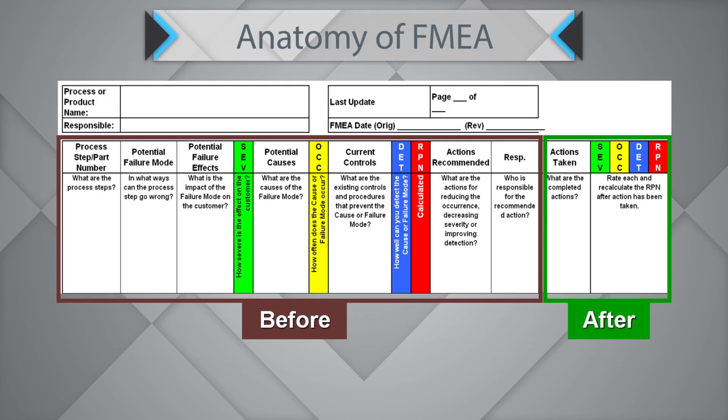This is how a typical FMEA sheet would look like. You would have the process step, the potential failure mode, the potential failure effects, the severity associated with it, the potential causes for the failure mode, occurrence, list of the current controls, detection, and the RPN scores — which are calculated based on severity, occurrence, and detection.